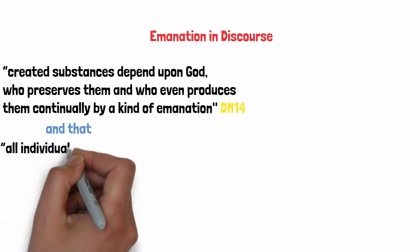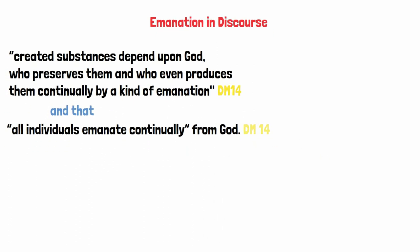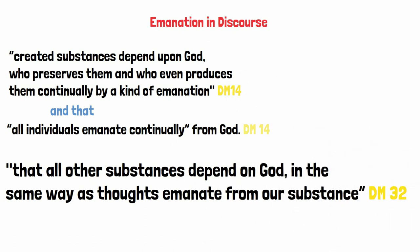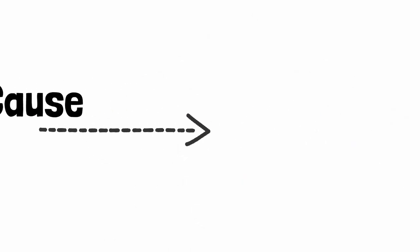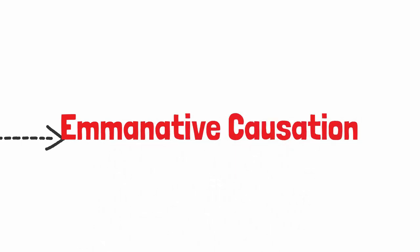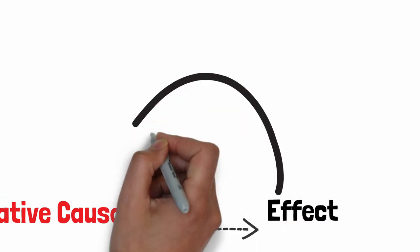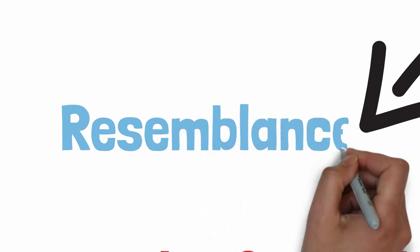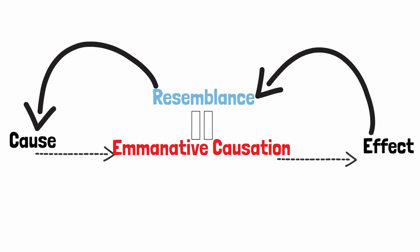That effects express their causes, and that substances express God by resembling God. Thus we have an explanation for Leibniz presenting his two different views about expression of God. One might wonder whether Leibniz really had emanative Neoplatonist notions in mind in the discourse. The first and best reason to think that he did is simply that Leibniz more than once invokes emanation in the discourse. In DM 14 we are told that created substances depend upon God, who preserves them and who even produces them continually by a kind of emanation, and that all individuals emanate continually from God. The notion reappears in DM 32, where Leibniz says that all other substances depend on God in the same way as thoughts emanate from our substance.